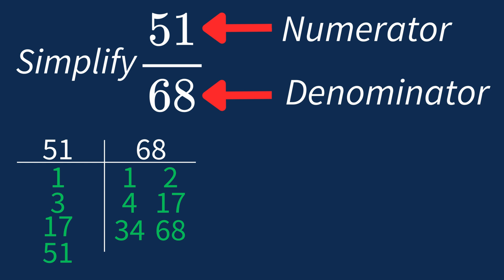So the largest common factor between 51 and 68 is 17. This means we can divide both the numerator and denominator by 17 to simplify the fraction.